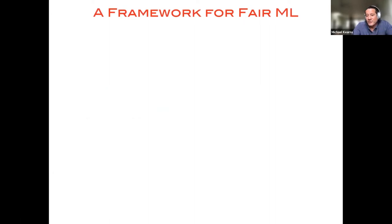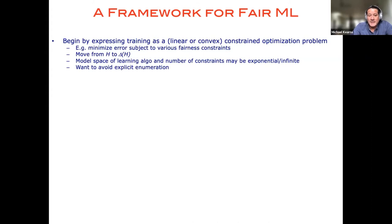Okay. So let me tell you what this agenda looks like in the abstract and then I'll tell you about some sample applications of it. So what we're going to do is we're going to begin by expressing the training of a model subject to fairness constraints as a linear or convex constrained optimization problem. So in other words, the basic problem we're going to write down is going to look something like minimize the classification error, for instance, subject to various fairness constraints.